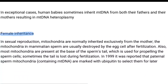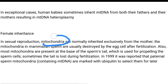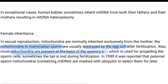In sexual reproduction, mitochondria are normally inherited exclusively from the mother. There is a biology joke: 'Mom, you have given me something dad never can — and that is the mitochondria.' The mitochondria in mammalian sperm are usually destroyed by the egg cell after fertilization. The majority of mitochondria are present at the base of the sperm tail, which is used for propelling the sperm and is mostly lost during fertilization.